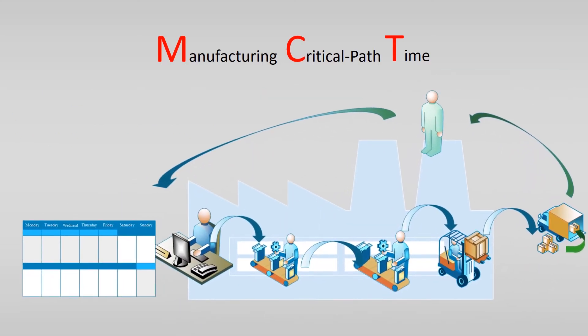Let's give a simple example of MCT. We use calendar days to calculate, looking at the days from the customer's order to delivery. This is a straightforward process with a sales process, two manufacturing processes, and transportation to the customer. The customer wants one product. On the first day, a Wednesday, the customer calls the sales department. The sales department takes orders throughout the day, and at the end of the day all orders are sent to production. The elapsed time for this step is one day.